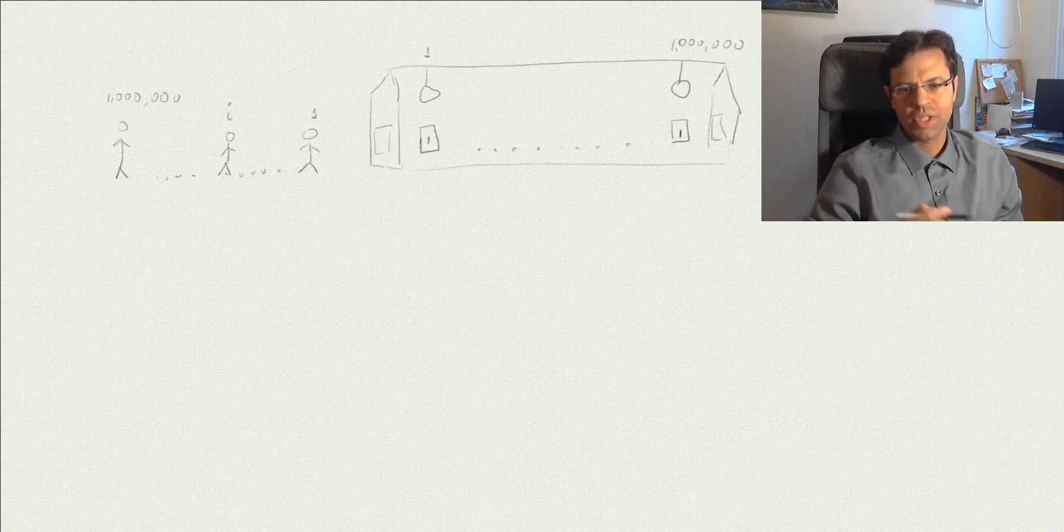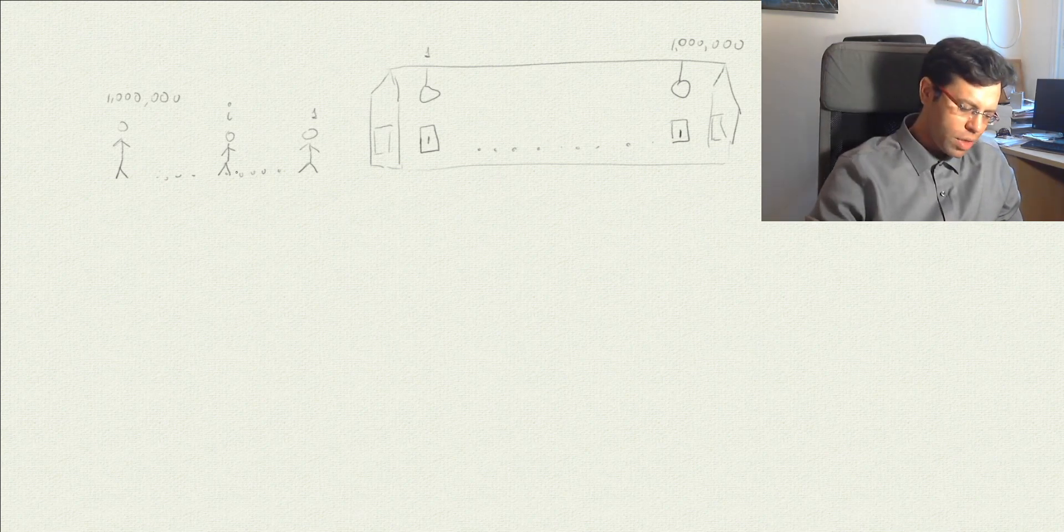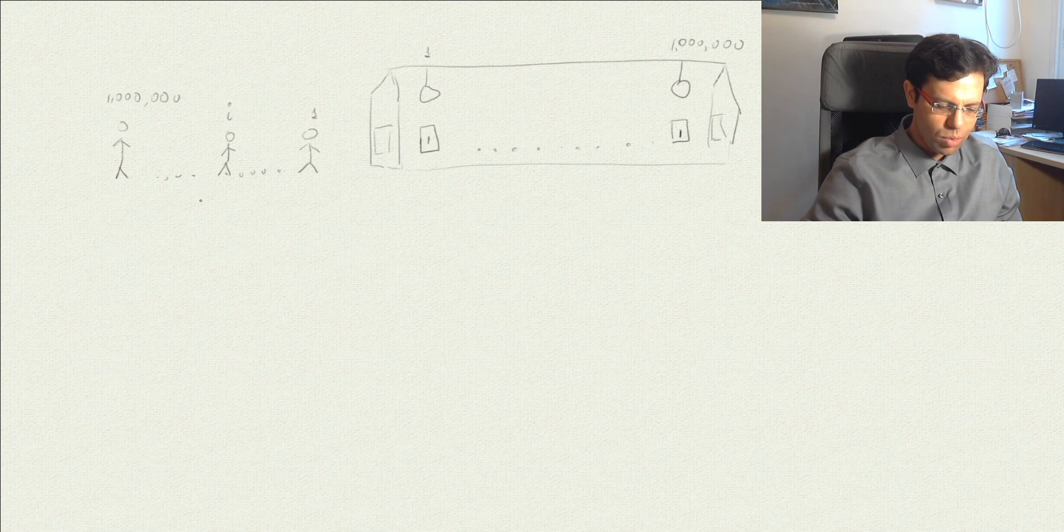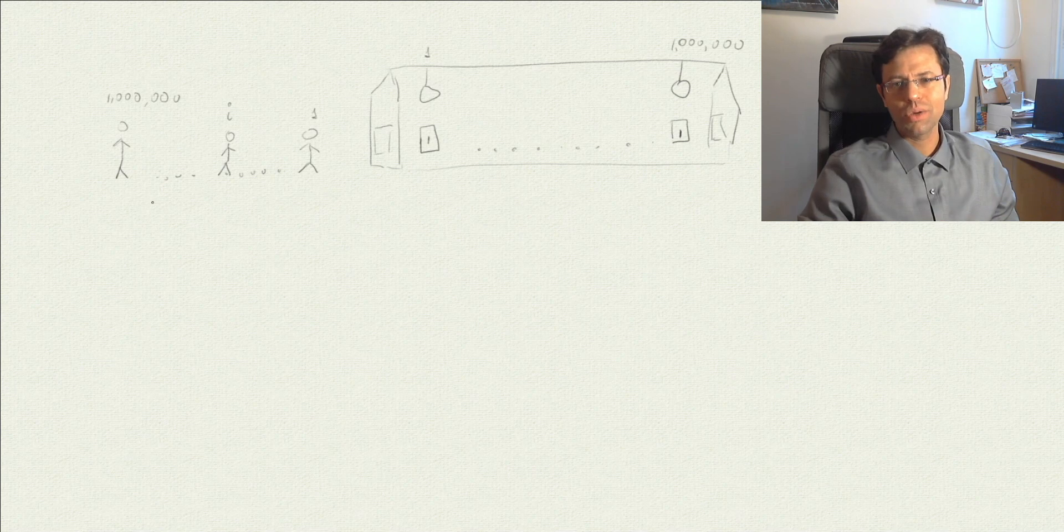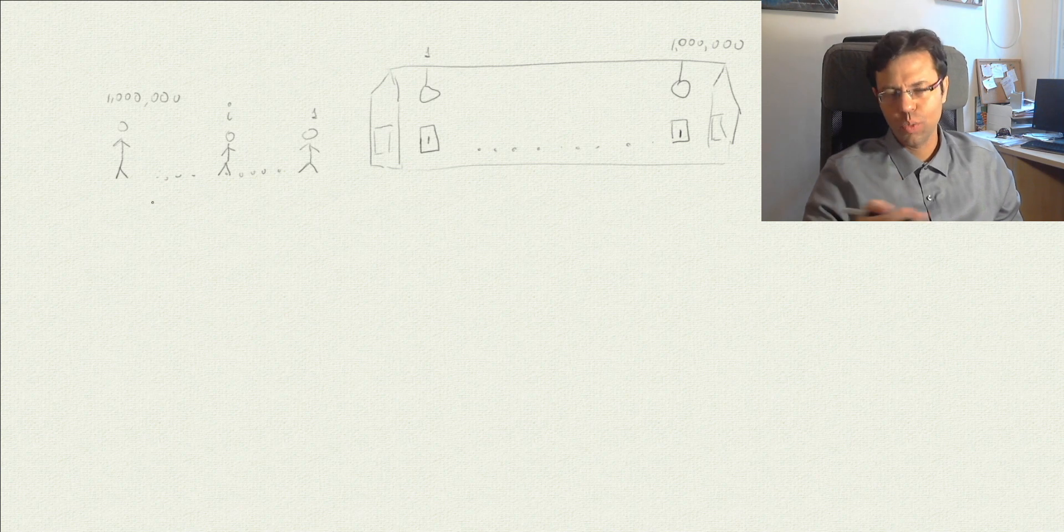Every second lamp. Then the i-th person enters and changes the state of every i-th lightbulb. Eventually the millionth person enters the hangar and changes the state of only the millionth lightbulb. The question is, can you characterize all the numbers of the lamps that will be turned on once this process is terminated, once the millionth person has completed his task?